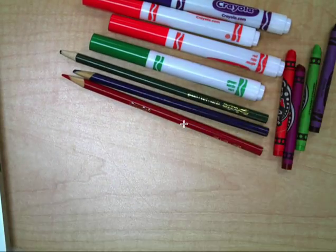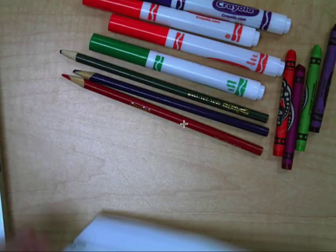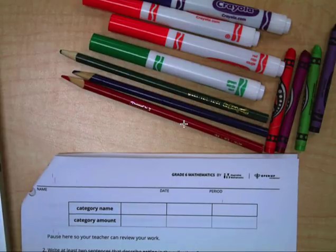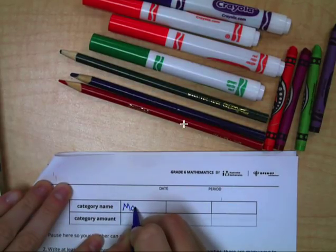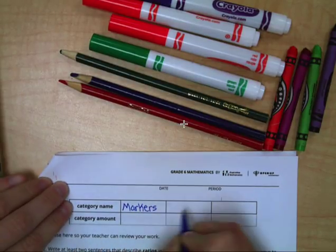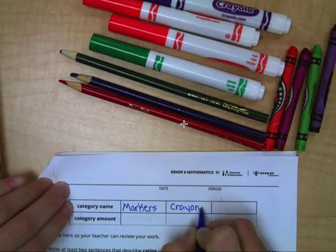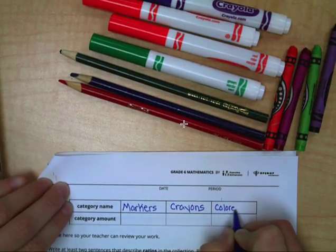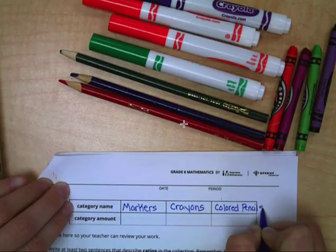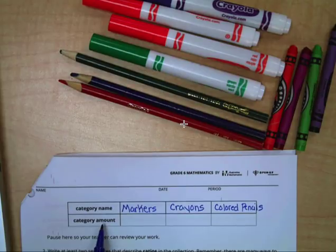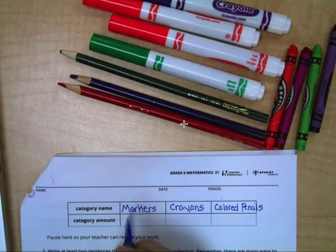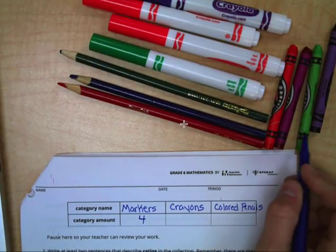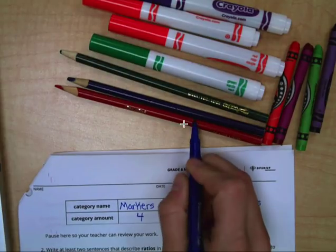Try and keep these all on the screen so that we can see. All right, so one category that probably came to mind was to divide them up into markers, crayons, and colored pencils. So let's use that as our first example. So category name would be markers, crayons, and colored pencils. Then you need to figure out the category in each amount. That's simple. All you have to do is count the number of markers. So we have one, two, three, four markers, one, two, three, four crayons, and one, two, three colored pencils.